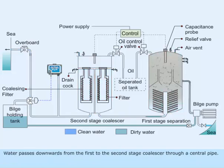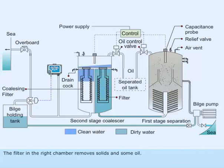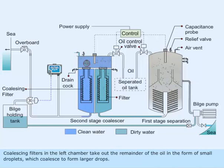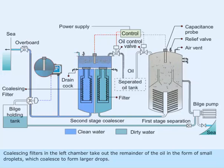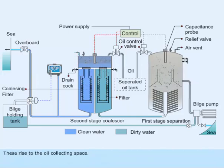Water passes downwards from the first to the second stage coalescer through a central pipe. The filter in the right chamber removes solids and some oil. Coalescing filters in the left chamber take out the remainder of the oil in the form of small droplets, which coalesce to form larger drops. These rise to the oil collecting space.